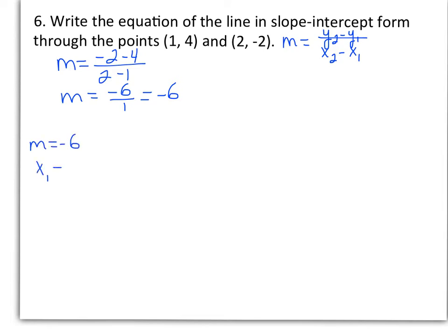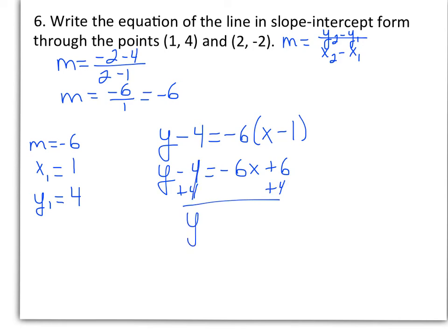Now when you're given two ordered pairs, it does not matter which ordered pair you choose for the point-slope form. I'm going to choose the first ordered pair, 1 and 4, just because they're both positive. But if you use 2 and negative 2, you will get the same answer when you simplify. So again, using point-slope form, I'll take y minus my y value equals my slope times x minus my x value, and then I will simplify. And then solve for y, I get y equals negative 6x plus 10.